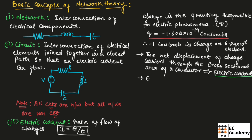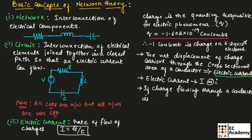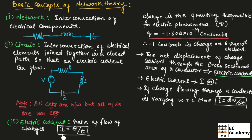Electric current can be denoted as capital I or small i. If the charge flowing through the conductor is varying with respect to time, then current I can be denoted as dq by dt. Initially we wrote current as Q by T, assuming the charge flowing through the conductor is not varying. If charge flowing through the conductor is varying, we can use the formula dq by dt.